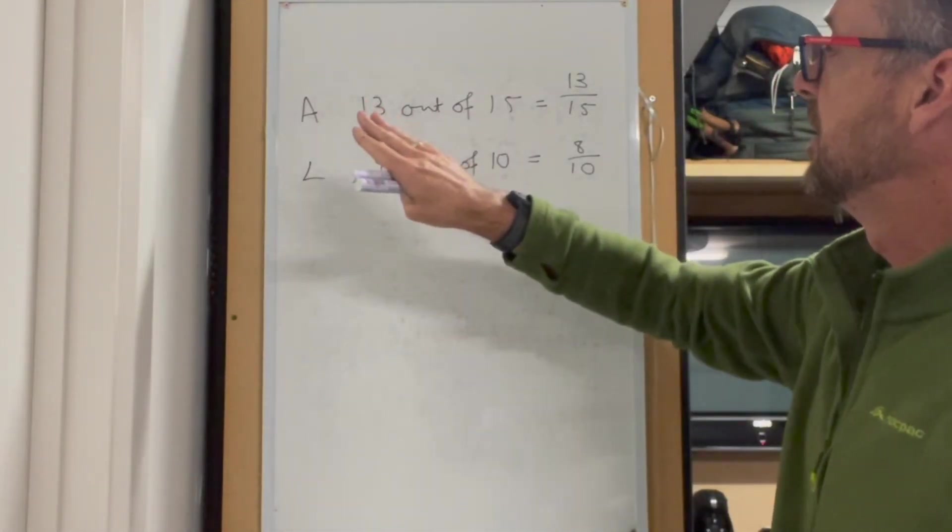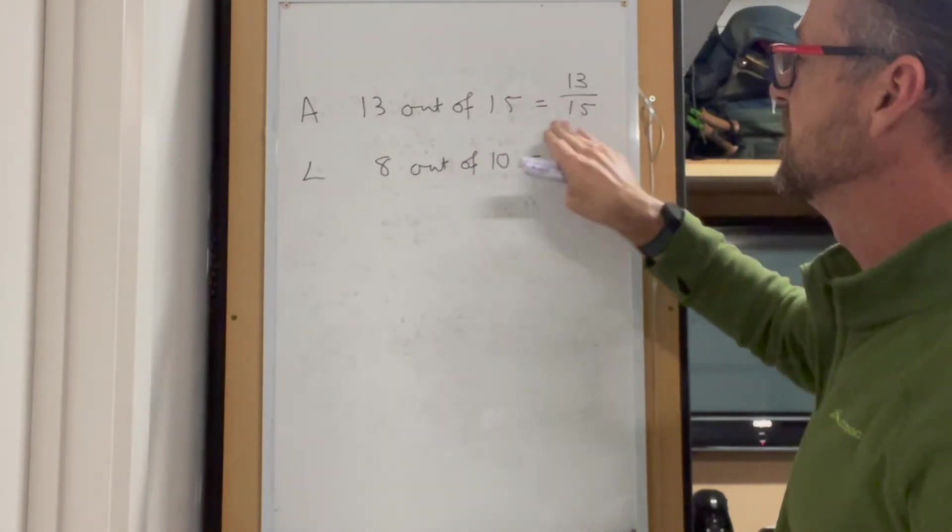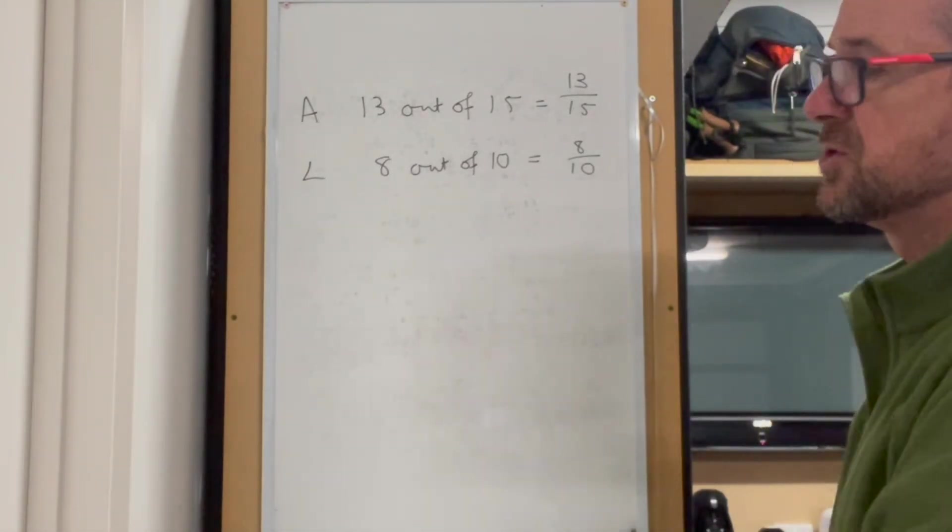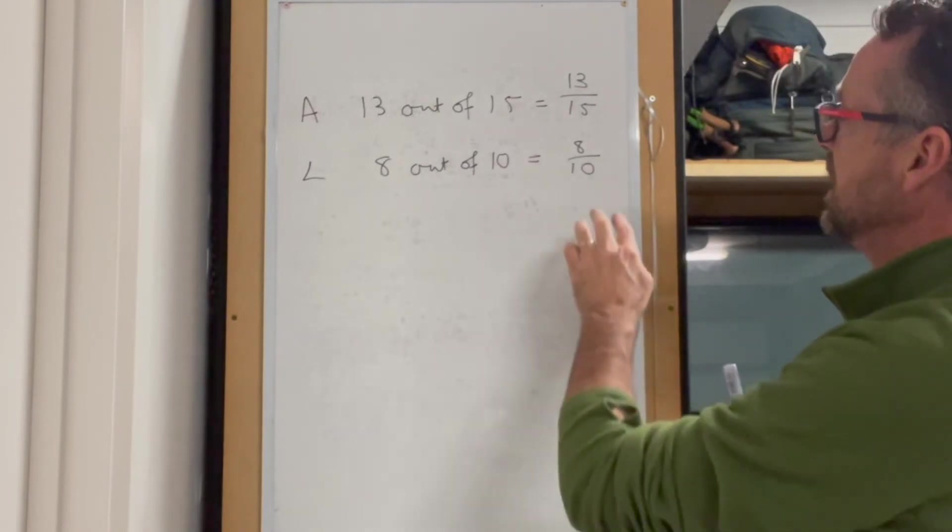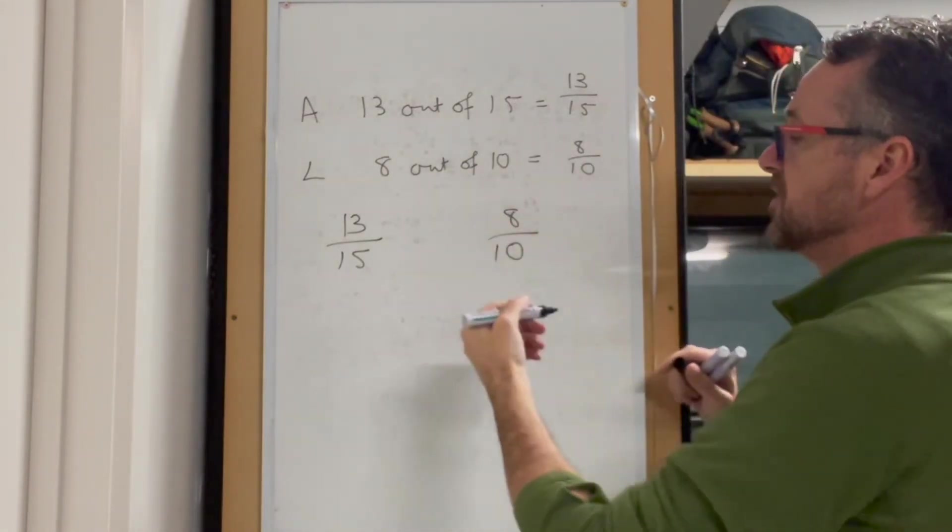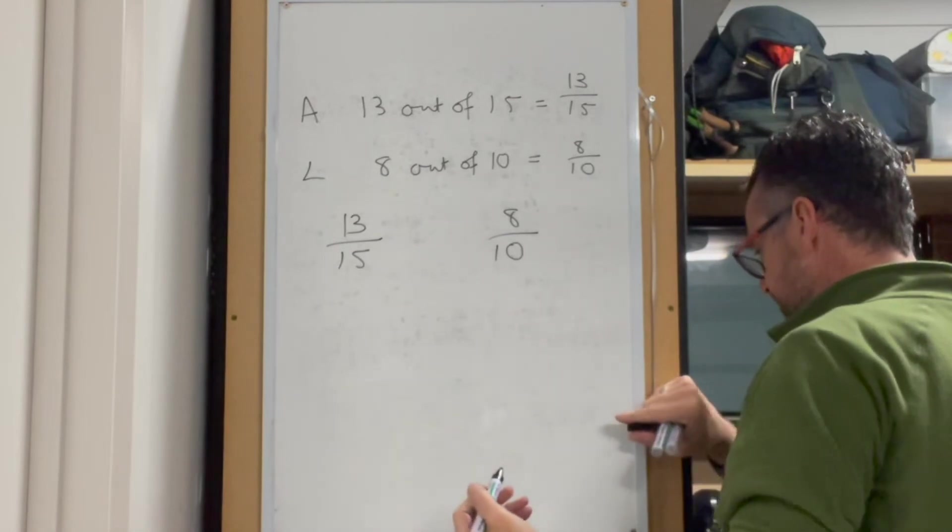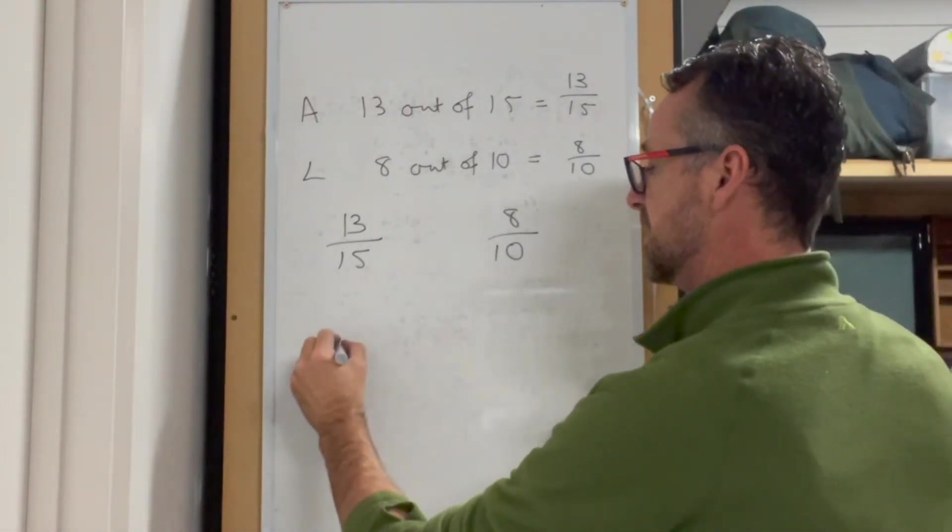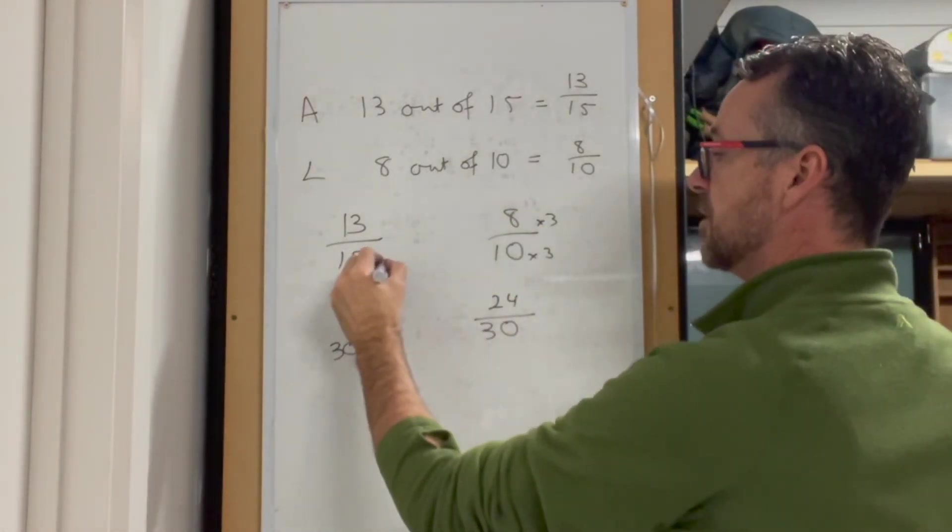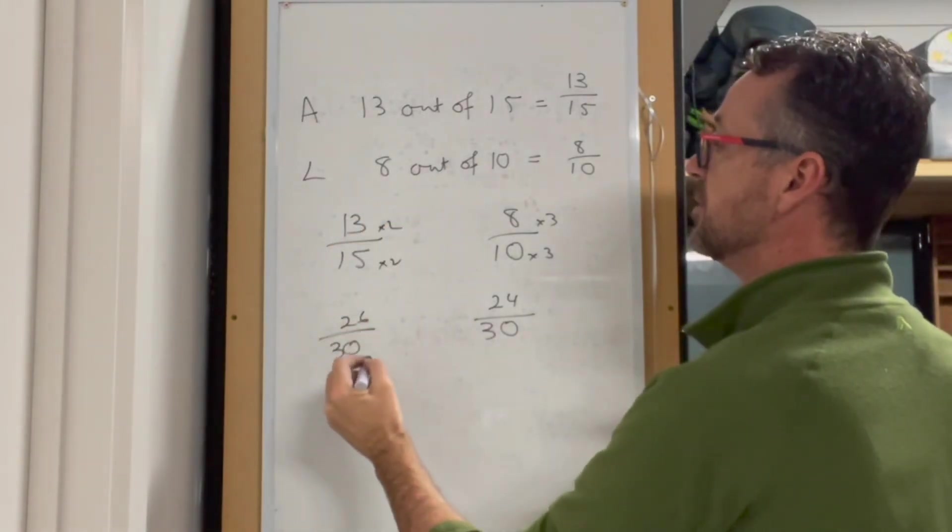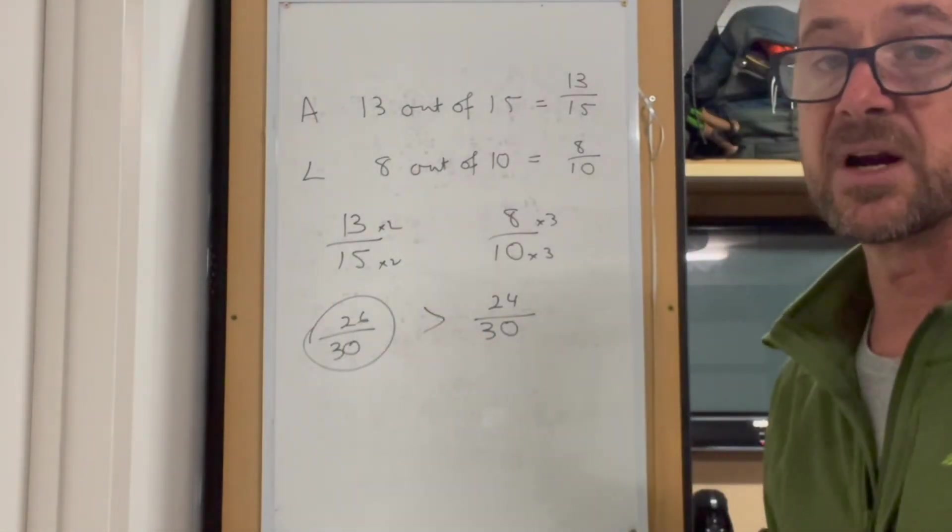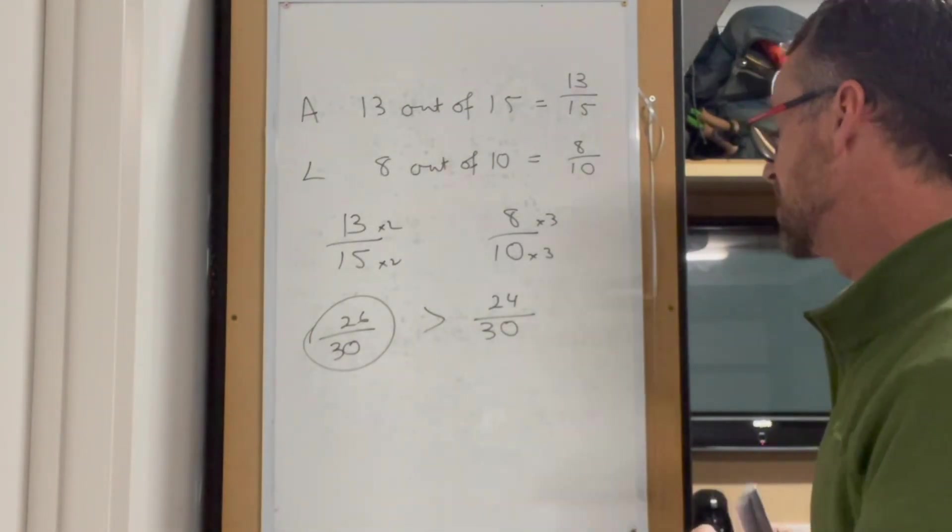Animal Farm scored 13 out of 15, and Lindhurst scored 8 out of 10. We want to compare the fractions to see which is larger. We need common denominators, which is 30. 13 over 15 times 2 gives 26 over 30. 8 over 10 times 3 gives 24 over 30. Animal Farm has the highest score, so Animal Farm should be awarded the prize.